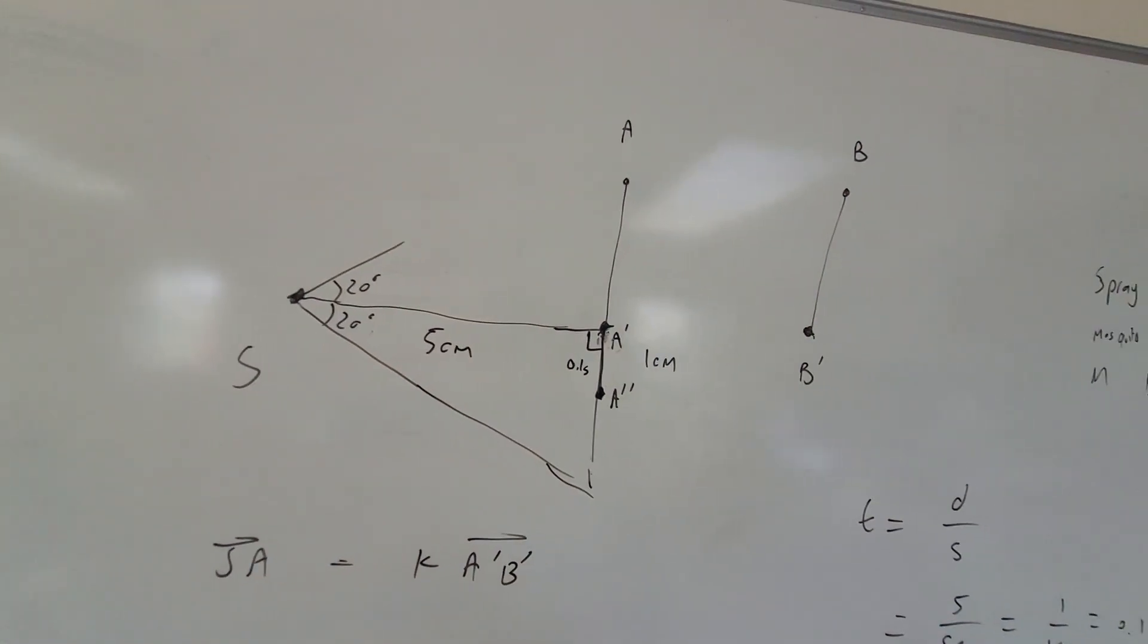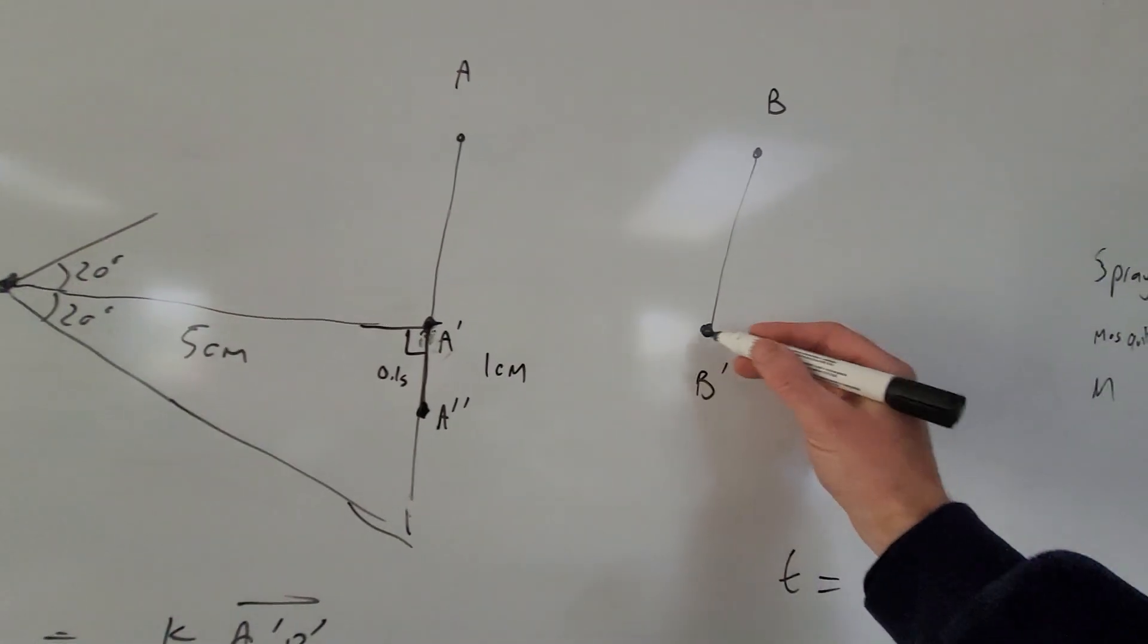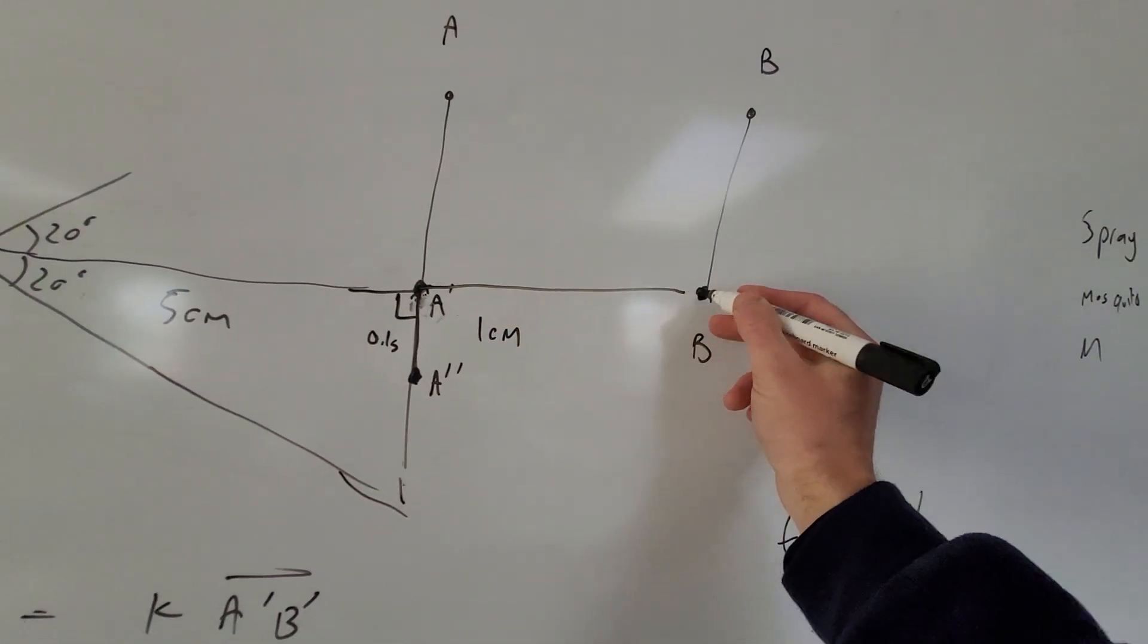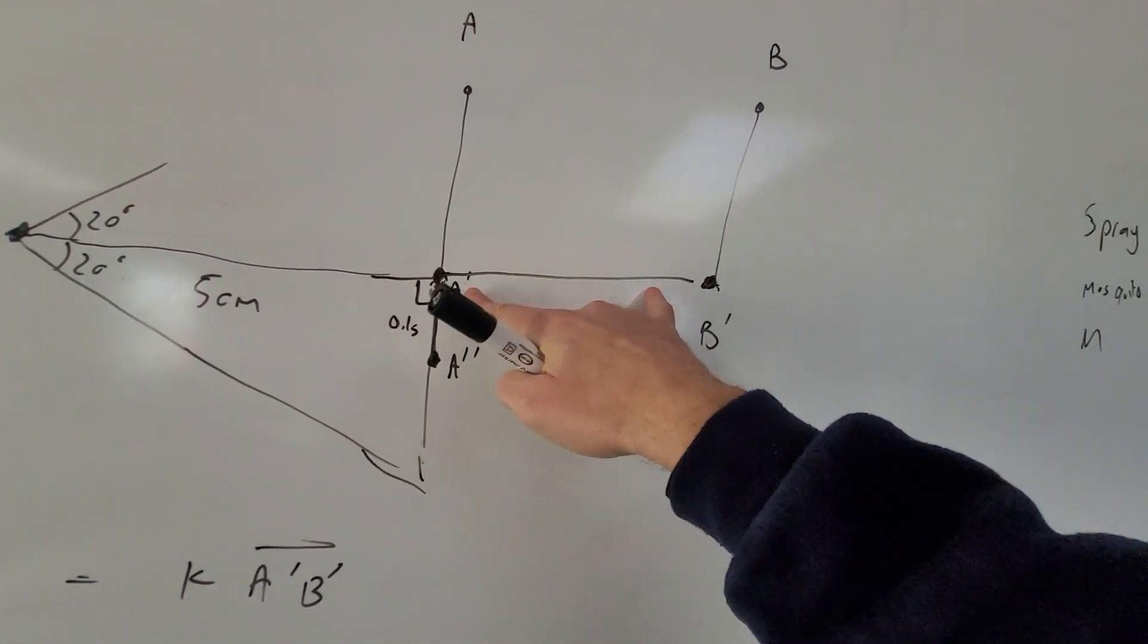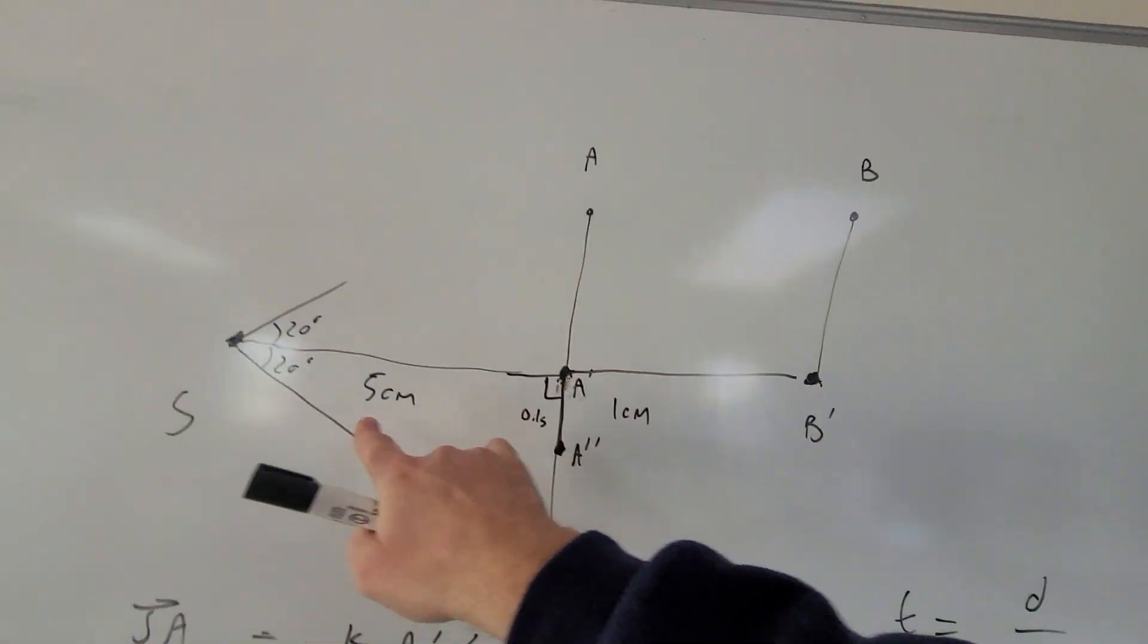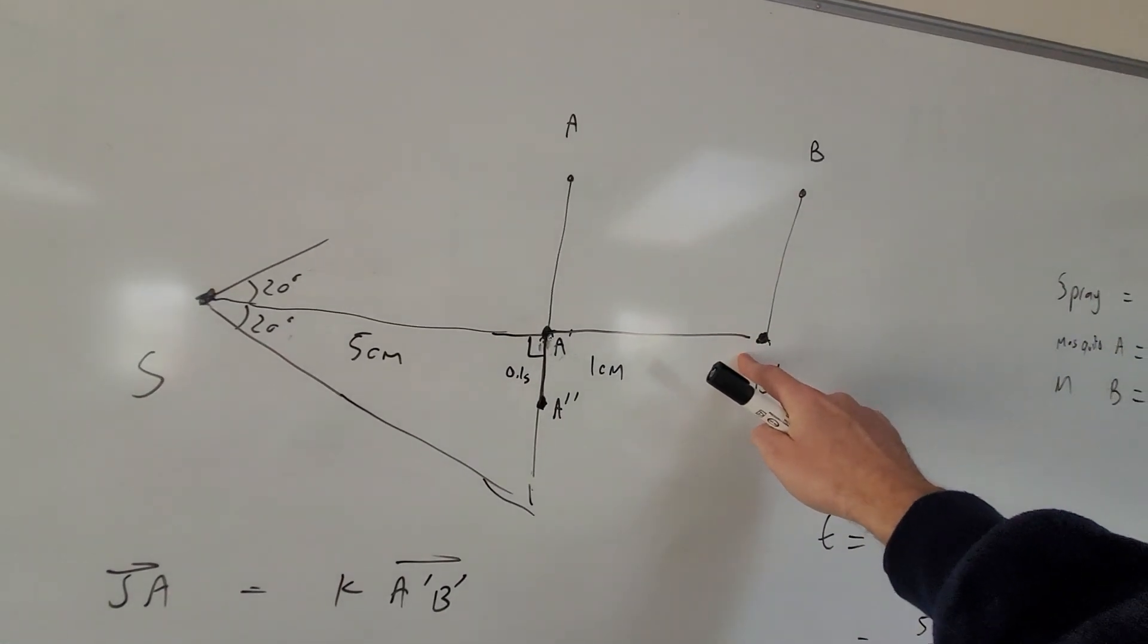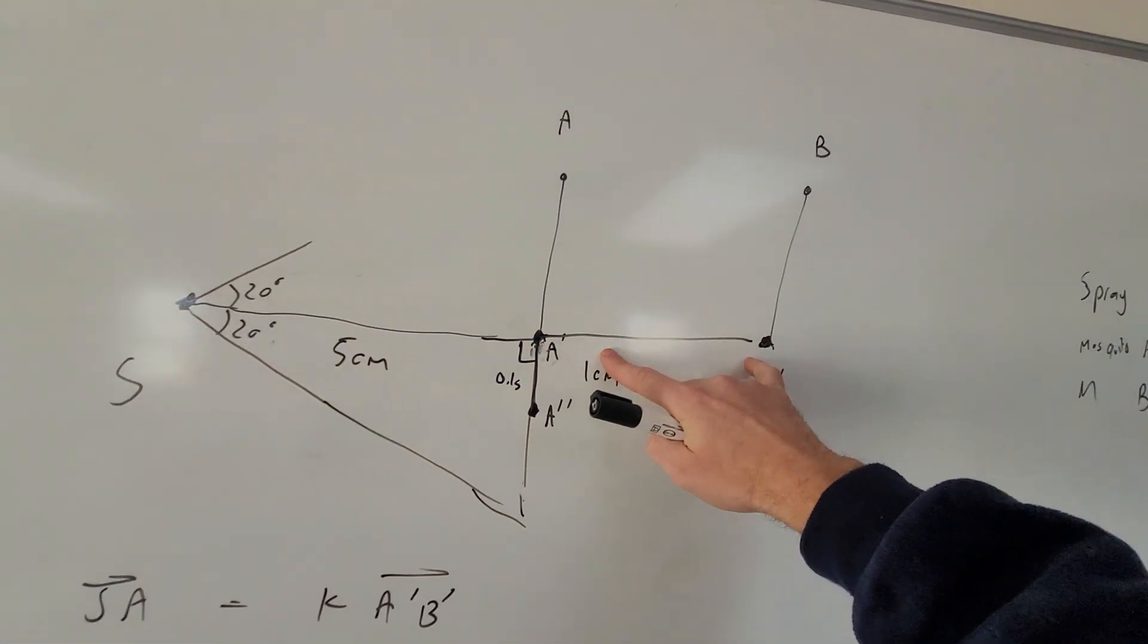So we're going to do that for mosquito A. And we also have mosquito B. And because we know when they're closest together, we can work out the distance between them, how far apart they are. We can work out that distance. And so then the distance from S to B, that is going to be just 5 centimeters plus this distance.